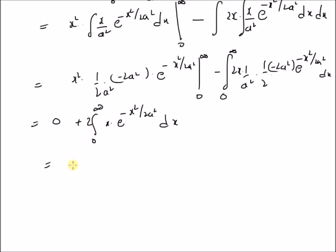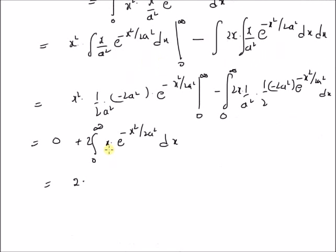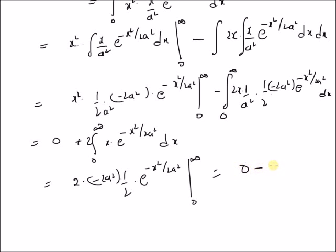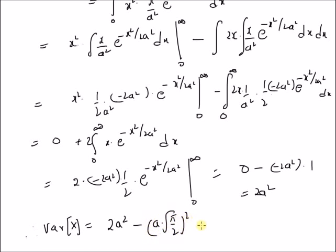This integral equals 2 times, applying the formula again, (−a²) · e^(−x² / 2a²) from 0 to infinity. At infinity this is 0; at 0 the exponential is 1, giving us 0 − (−2a²) · 1 = 2a². Therefore E[X²] = 2a², and the variance of the Rayleigh distributed random variable is 2a² − (a · √(π/2))² = a²(2 − π/2). This is the variance of the Rayleigh random variable.